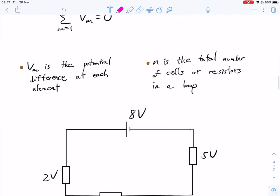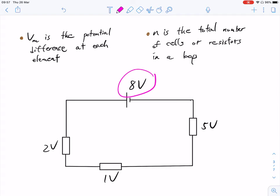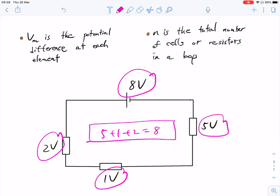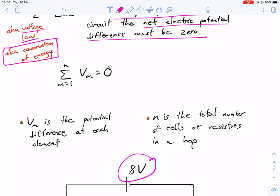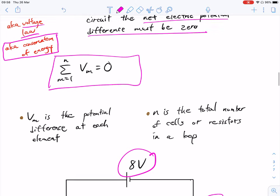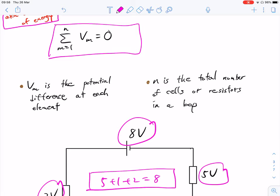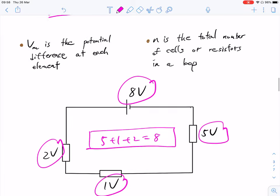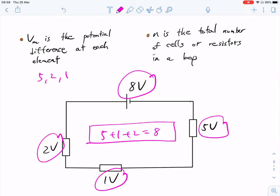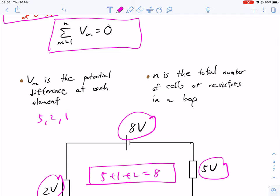So if we look at that, so here we have our example. If we have a battery that's 8 volts, then 5 volts may be used up here, 1 volt may be used up there, 2 volts may be used up there. But the sum of all of these, 5 plus 1 plus 2, is equal to 8. So what the battery provides, everything else will use all of that up. And so as a result, energy will be conserved as a result of that. So here we have another sort of mathematical expression here. Little details down here. N is the total number of cells or resistors in a loop. So here we have one cell or resistor. And Vm is the potential difference at each element. So that's the 5, the 2, and the 1. So when we add all that together, it has to equal to what the battery provided or the cells.